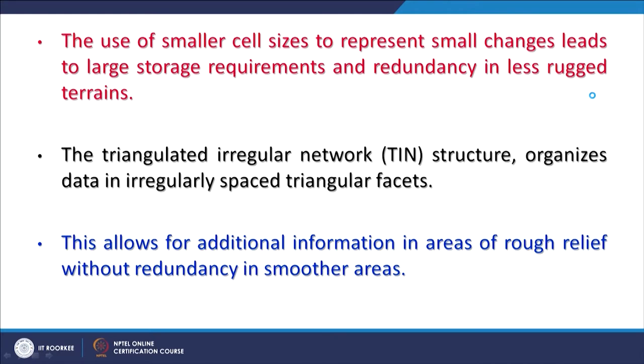TIN — triangulated irregular network — has all triangles of different sizes and shapes, representing triangular facets of the terrain. This is the advantage because it is adaptable to relief roughness. The sizes of triangles depend on the density of observations. If density of observations is very high and each observation point represents different elevation values, as in hilly terrain, these will create smaller triangles, and the reverse in case of plain areas.